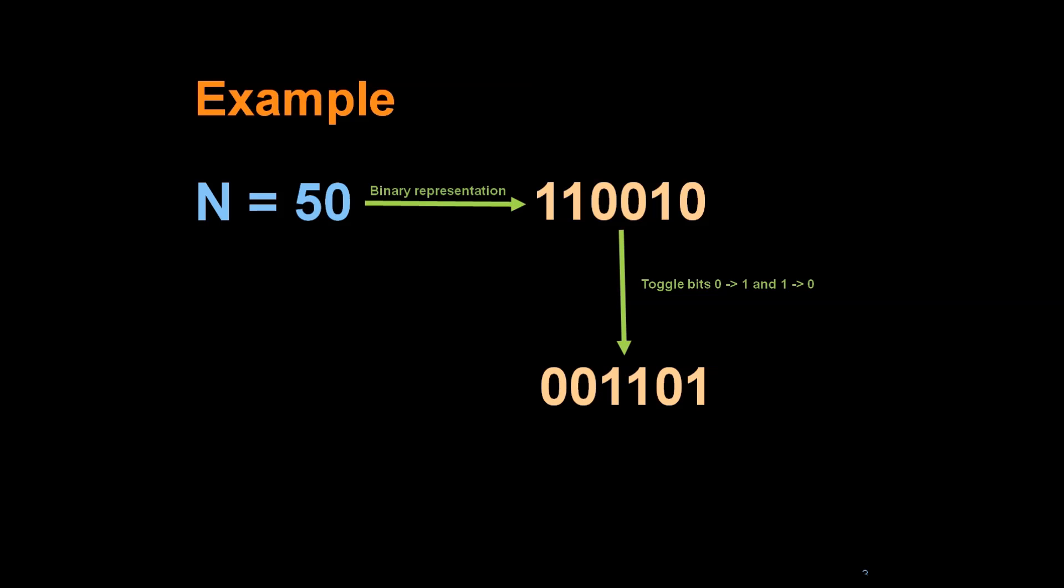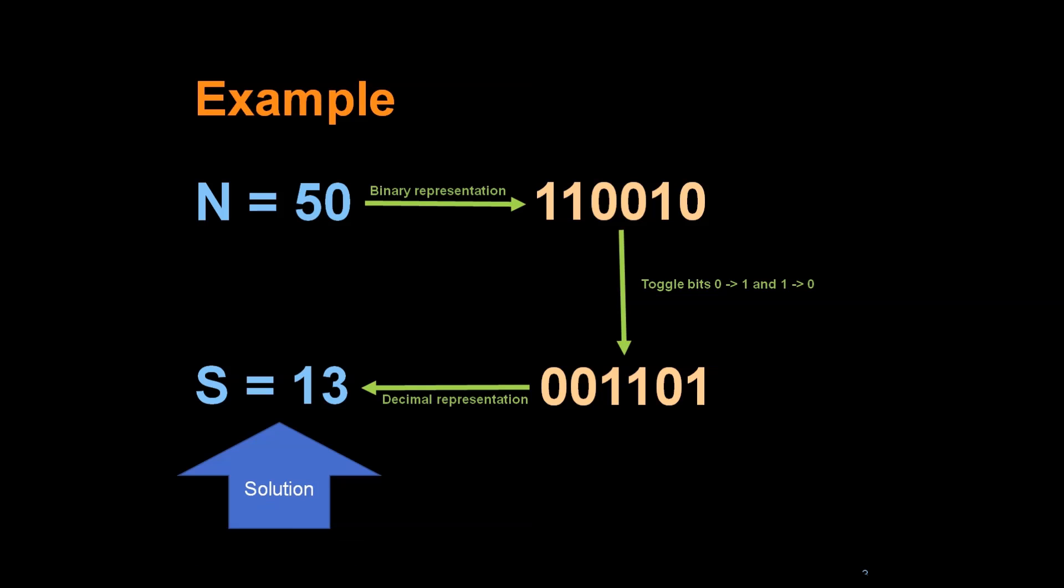Toggle all bits from 0 to 1 and 1 to 0. So we get 001101 and convert it back to decimal representation. The number would be 13, which is our solution.